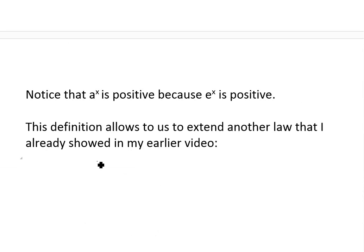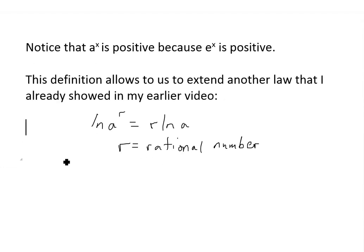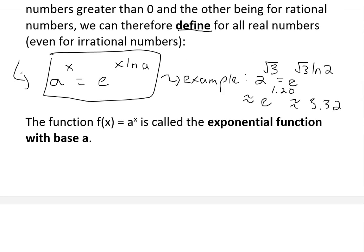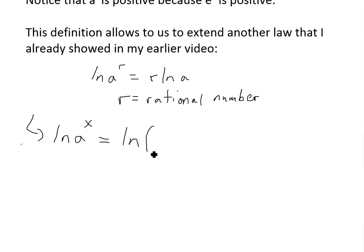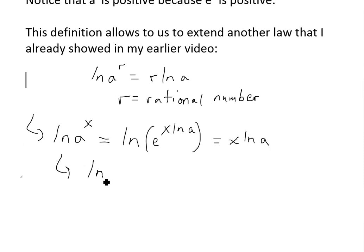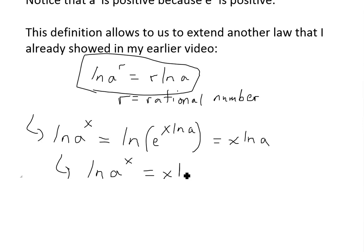This definition also allows us to extend another law from my earlier video: ln(a^r) equals r·ln(a) for rational r. Using our new definition, ln(a^x) equals ln(e to the x·ln(a)), and since ln and e cancel, this simply equals x·ln(a), extending the law to all real numbers.